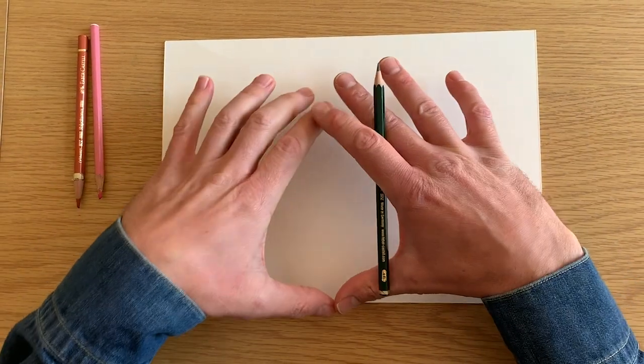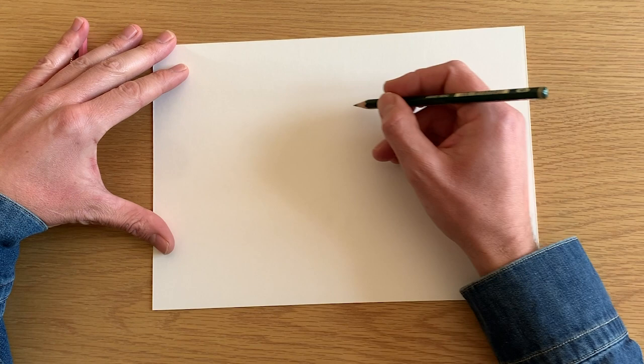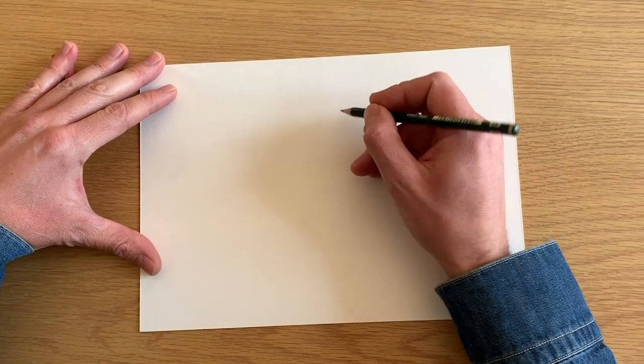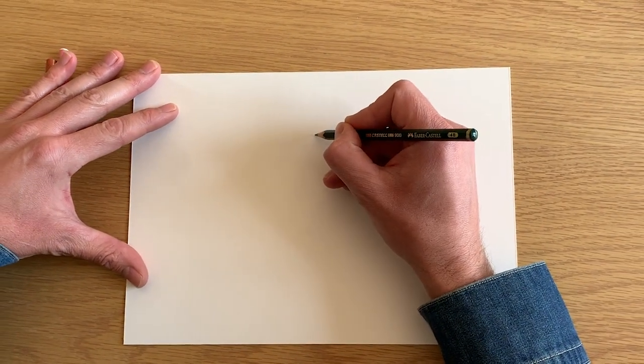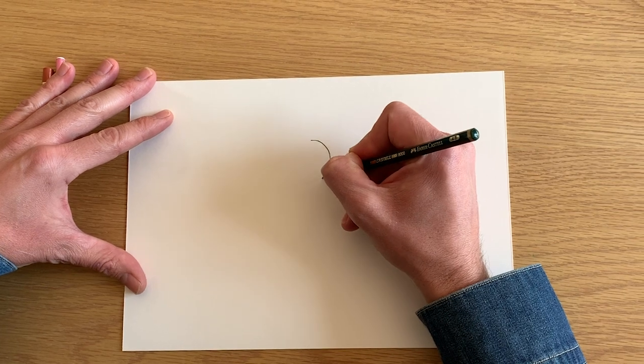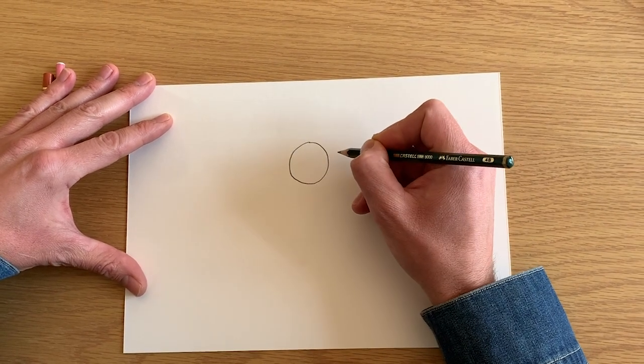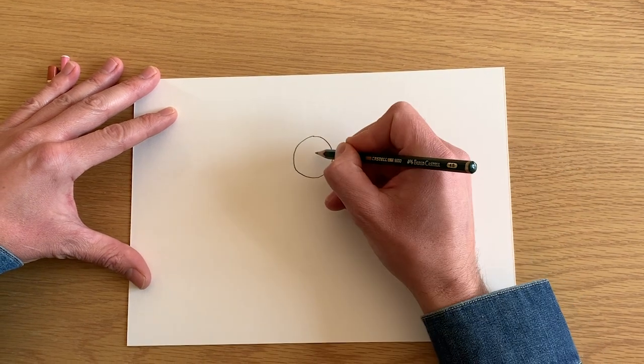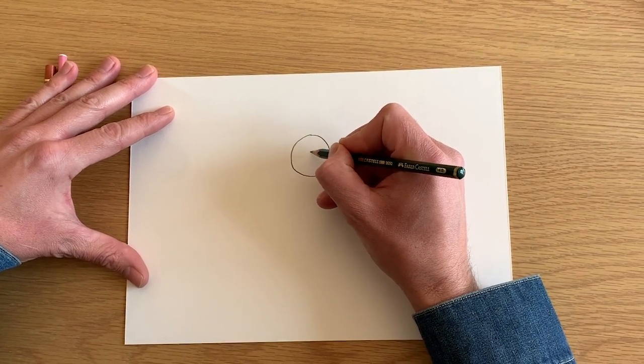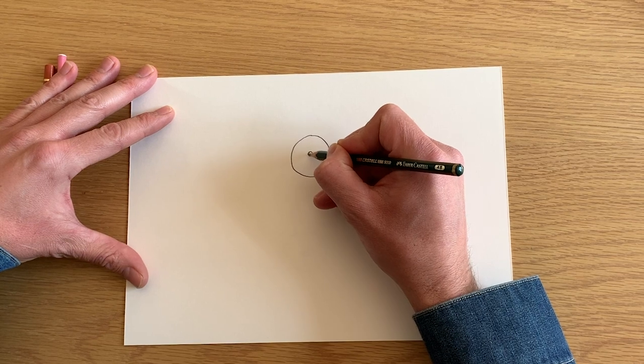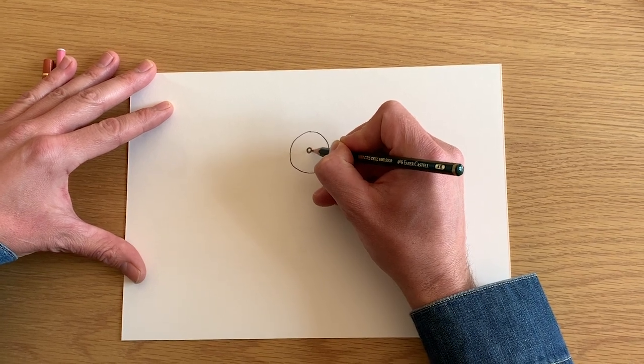You're going to have your paper in a landscape position like this, and with your drawing pencil you're going to draw a circle in the middle of the page like that. And then in the middle of the circle you're going to draw another little circle like that for his pupil.